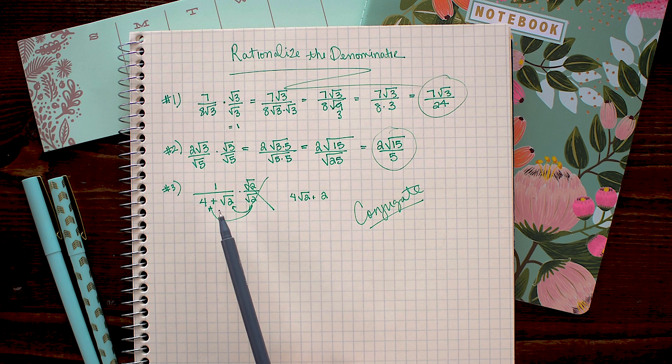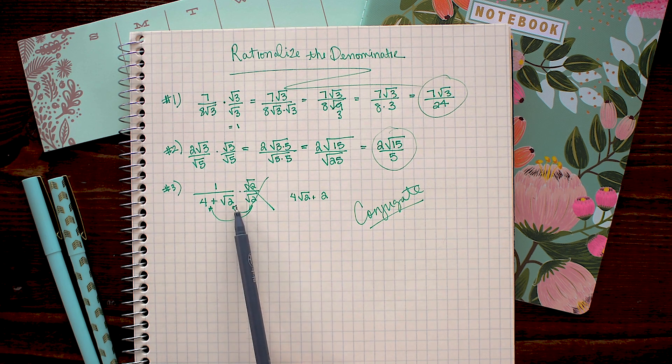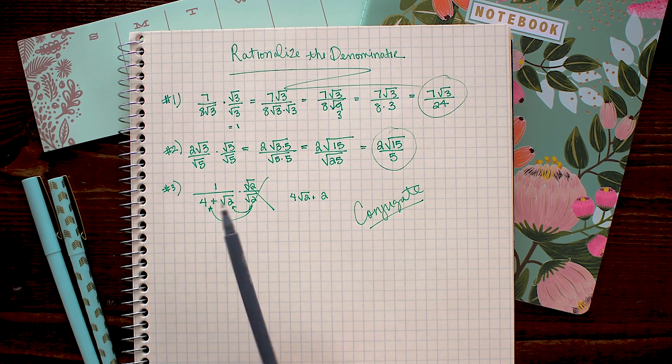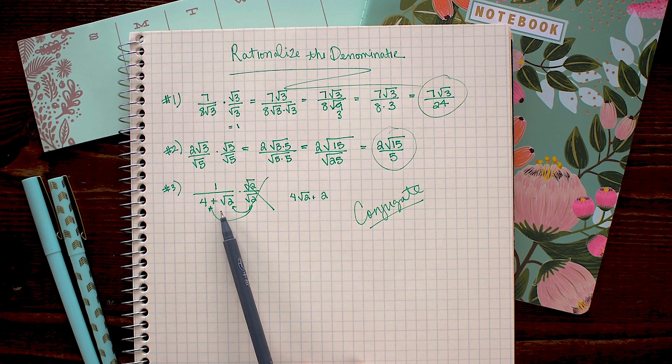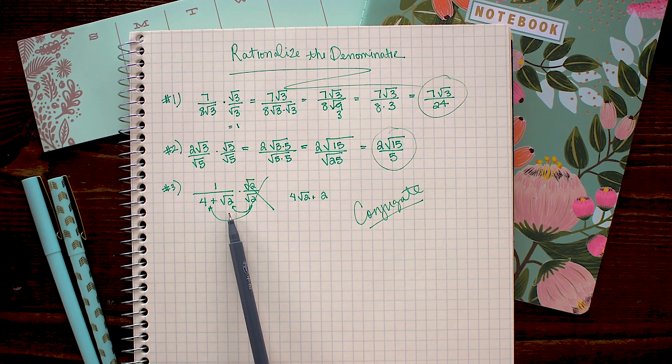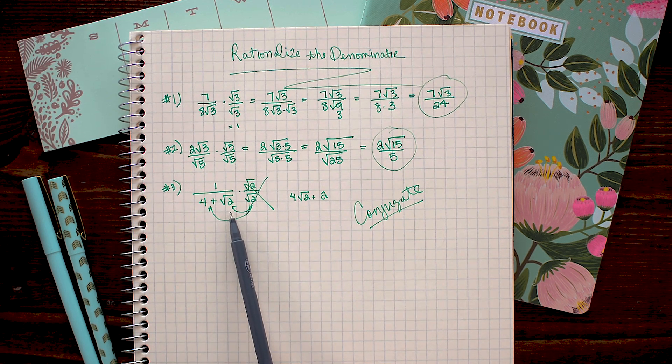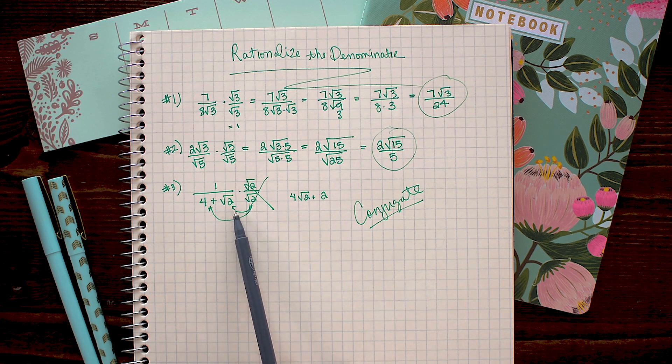Now the way FOIL works, when we multiply this binomial by its conjugate, we're going to lose those middle terms, and we're going to be left with whole numbers, which is exactly what we want in this situation, because we're trying to get rid of the square roots in the denominator.